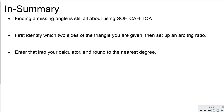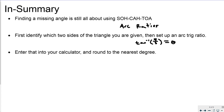So that's it! Finding the missing angle in a right triangle is all about using SOHCAHTOA, but here we use the arc ratios instead. Make sure you identify which two sides of the triangle you're given, then set up the arc ratio — for example, the arc tangent of five over eight equals your missing angle. Enter that into your calculator and round to the nearest degree. Thanks for watching, and I'll see you in the next one!